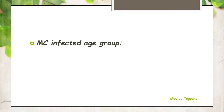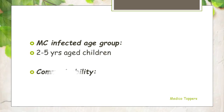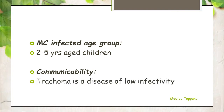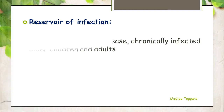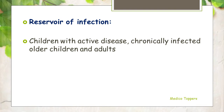The most commonly infected age group is around 2 to 5 years aged children. Trachoma is considered to be a disease of low infectivity. Regarding the reservoir of infection — the reservoir is where the organism gets multiplied — here the reservoir is children with active disease or chronically infected older children and adults.